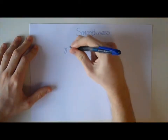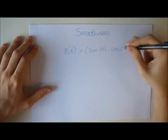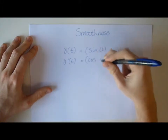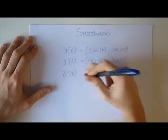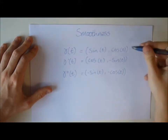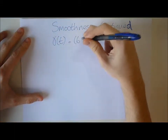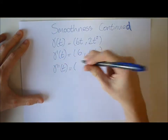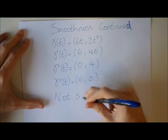A smooth curve gamma is a function that can be differentiated infinitely many times. For example, gamma(t) = (sin t, cos t) can continually be differentiated, so this is smooth. However, gamma(t) = (6t, 2t^2) can only be differentiated 3 times before it becomes 0, therefore this is not smooth.